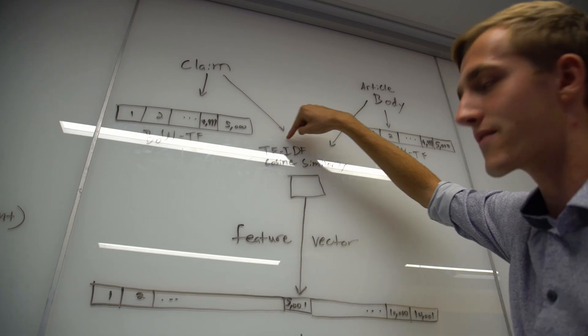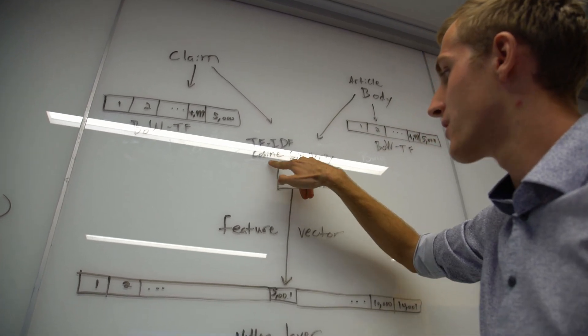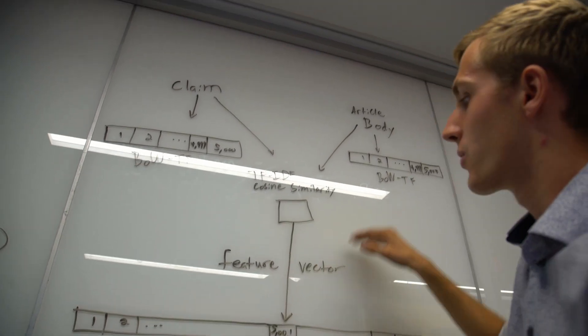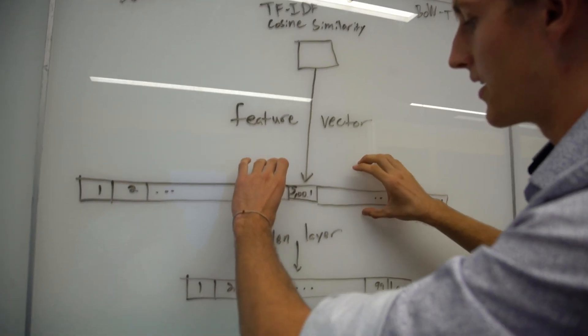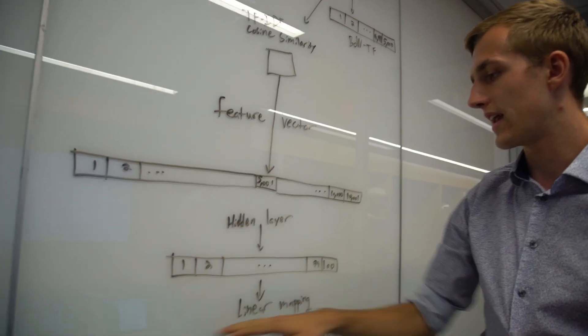We then use term frequency-inverse document frequency and cosine similarity of that output to run it through our feature vector, which combines all this input and extracts it down to one hidden layer with 100 nodes in it.